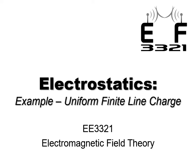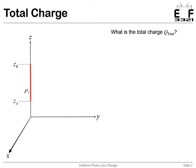Electrostatics, example of a uniform finite line charge. This is going to be one of the more difficult examples in this class, so buckle your mental seatbelts.